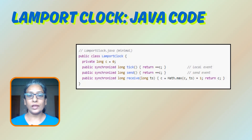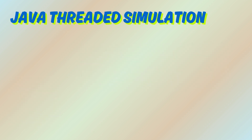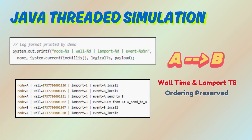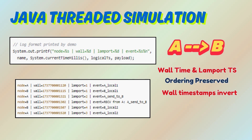Let's see a tiny threaded simulation demonstrating logical clock significance. This small demo prints both wall time and Lamport timestamp, so you can see ordering preserved even when wall timestamps invert. Two nodes exchange messages and print both wall and Lamport timestamps. Notice how log ordering by Lamport is causal even if wall clock order is inverted.